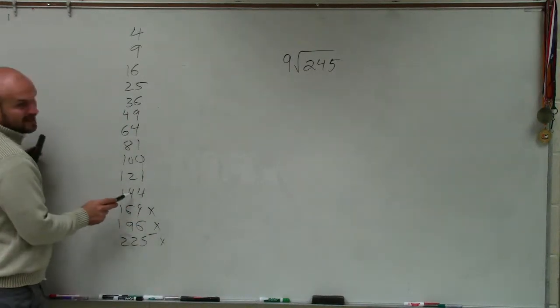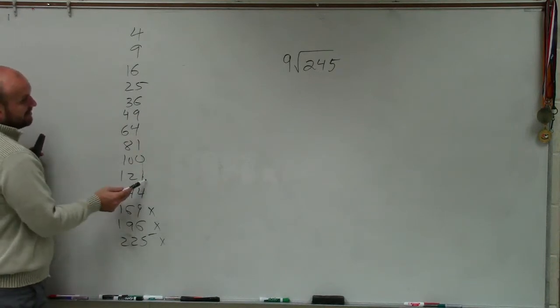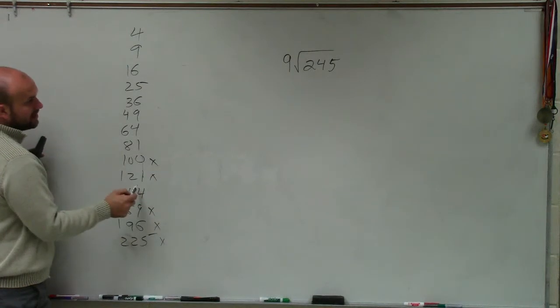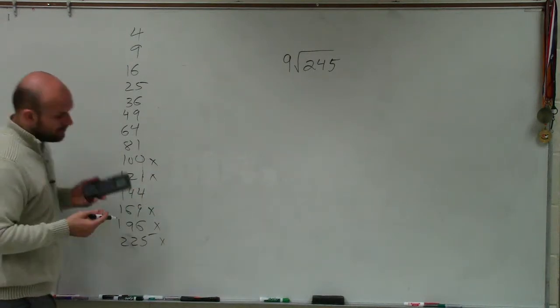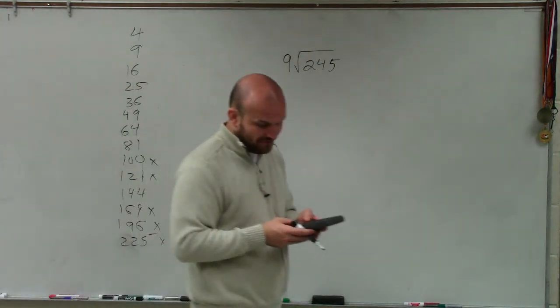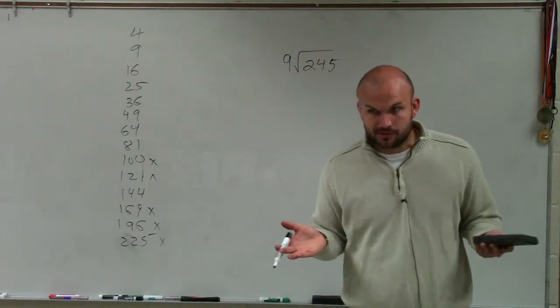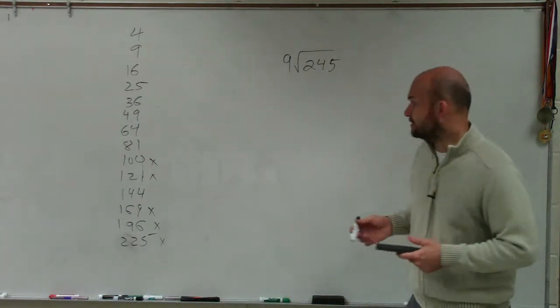I know this doubled is 288, so I know it doesn't divide in there. This doubled is 242, right? That's 200. Let's just try 81. So I'll do 245 divided by 81, 3.02. So it doesn't divide into there evenly.